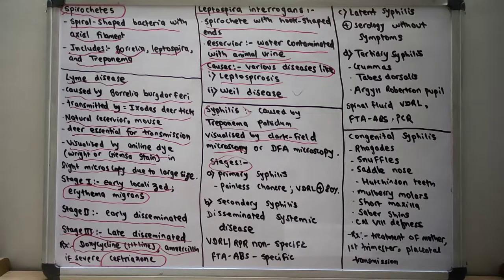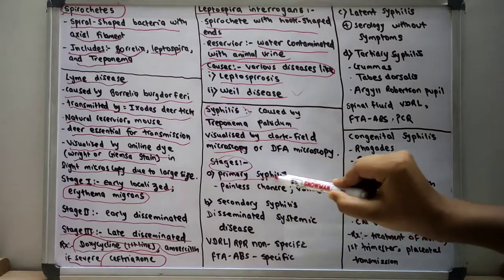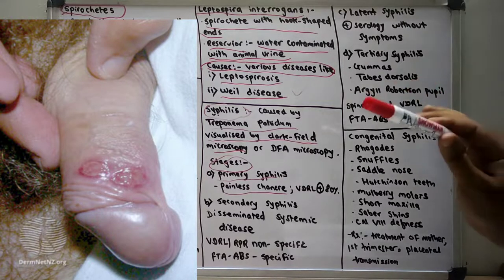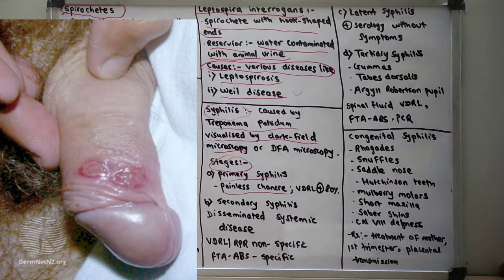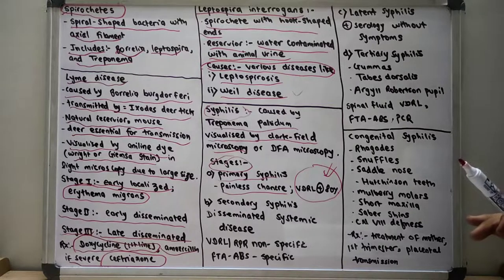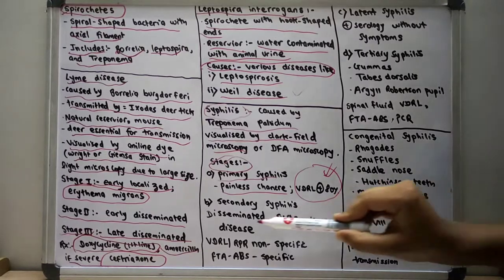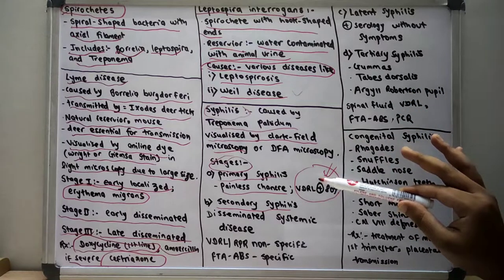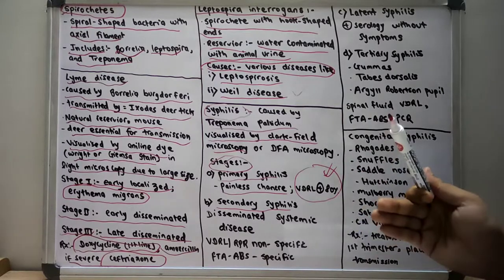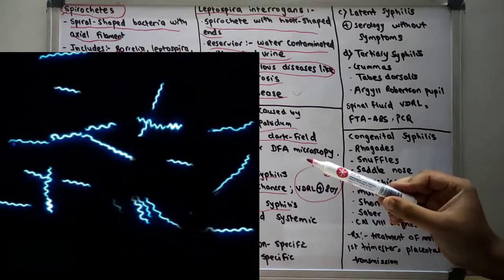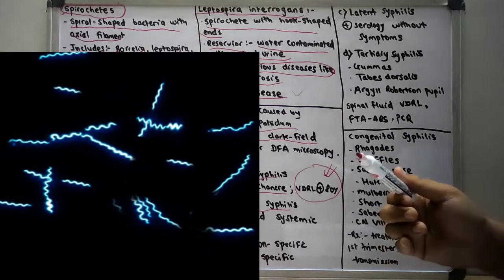In primary syphilis there is presence of a painless chancre. You can see in this picture the chancre present on the male genitalia — it is a painless lesion. VDRL is positive in 80 percent of patients in primary syphilis. We can also use dark field microscopy to visualize Treponema in the fluid oozing from the chancre and directly visualize the spirochetes.